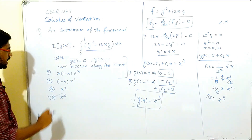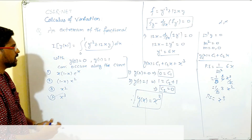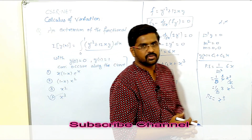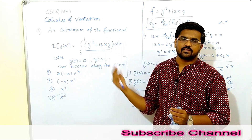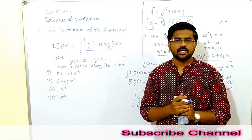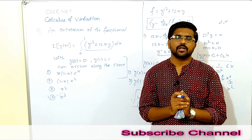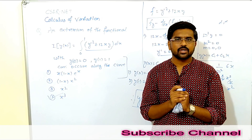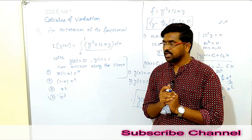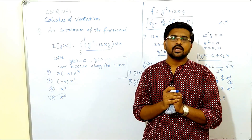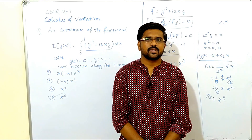So the fourth option, x³, is correct. Calculus of variation contributes 8 to 11 marks in the CSI net exam and this topic is very manageable. We will make more videos about calculus of variation. Thank you for watching — if you found this video good, please like it, and if you are new, please subscribe. Thank you.